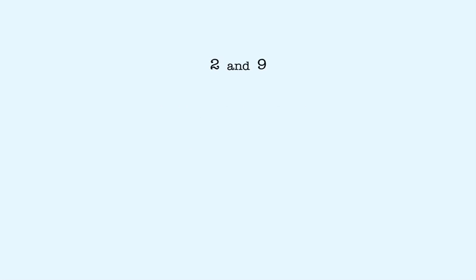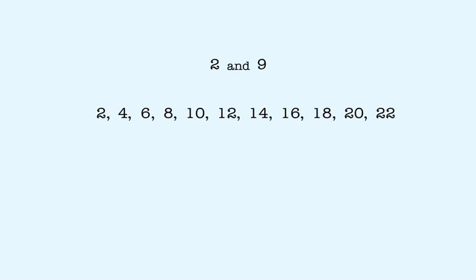Last example: 2 and 9. First, we list multiples of 2. Then we list multiples of 9. The smallest number that's a multiple of both 2 and 9 is 18. In the remainder of this lesson, you'll find the least common multiple of two numbers like these.